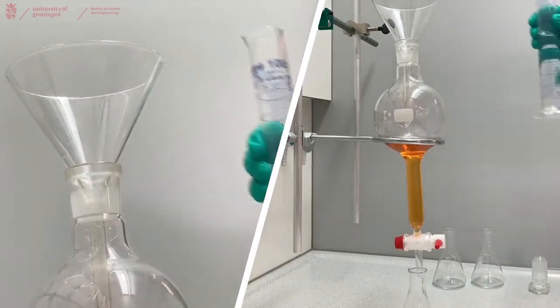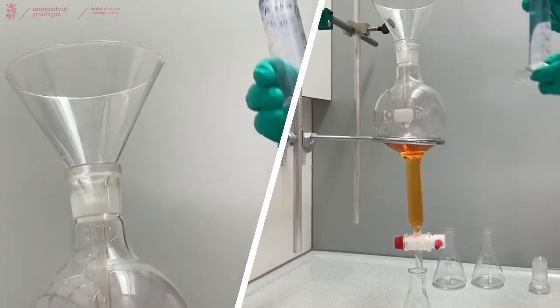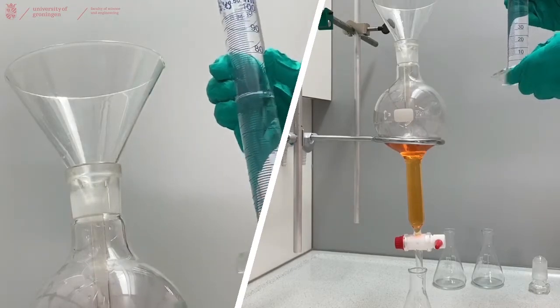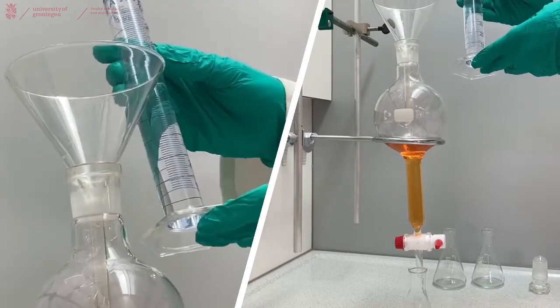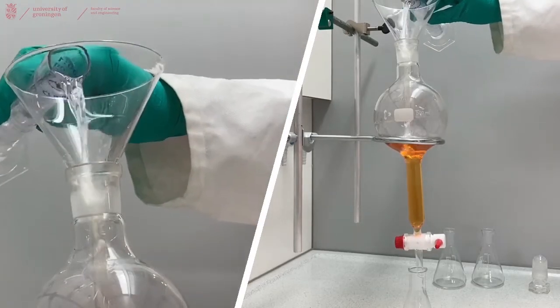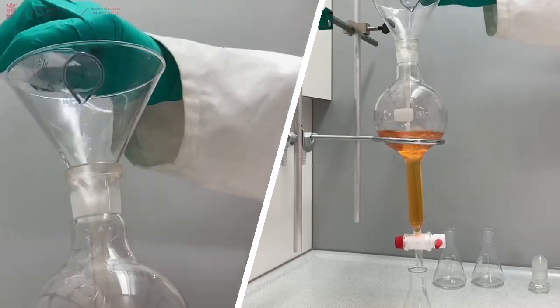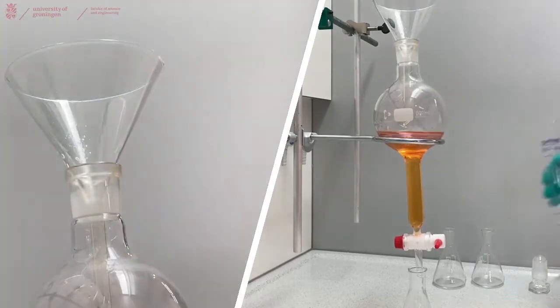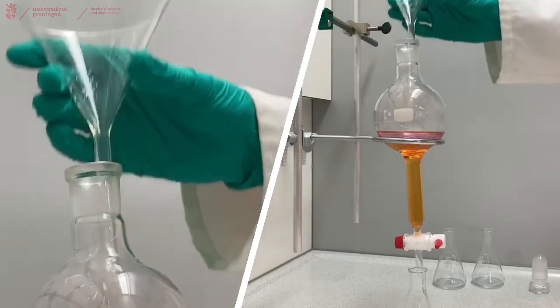Now we are going to extract our iodine in the water layer towards our organic layer. In this case, our organic layer is pentane. And we are using the same amount of pentane as we had water. Add the pentane to the separator funnel and remove the funnel from your separator funnel.